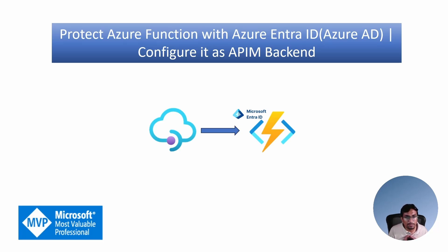In an enterprise integration world, we might need to expose secure functions as APIs through API management. In today's video, we will see how to set up an Azure function with proper Entra ID authentication, register a client application in Entra ID with the right permissions, use the client application to access the API, configure Azure API management to securely communicate with your protected function, and test the entire flow to ensure everything works.